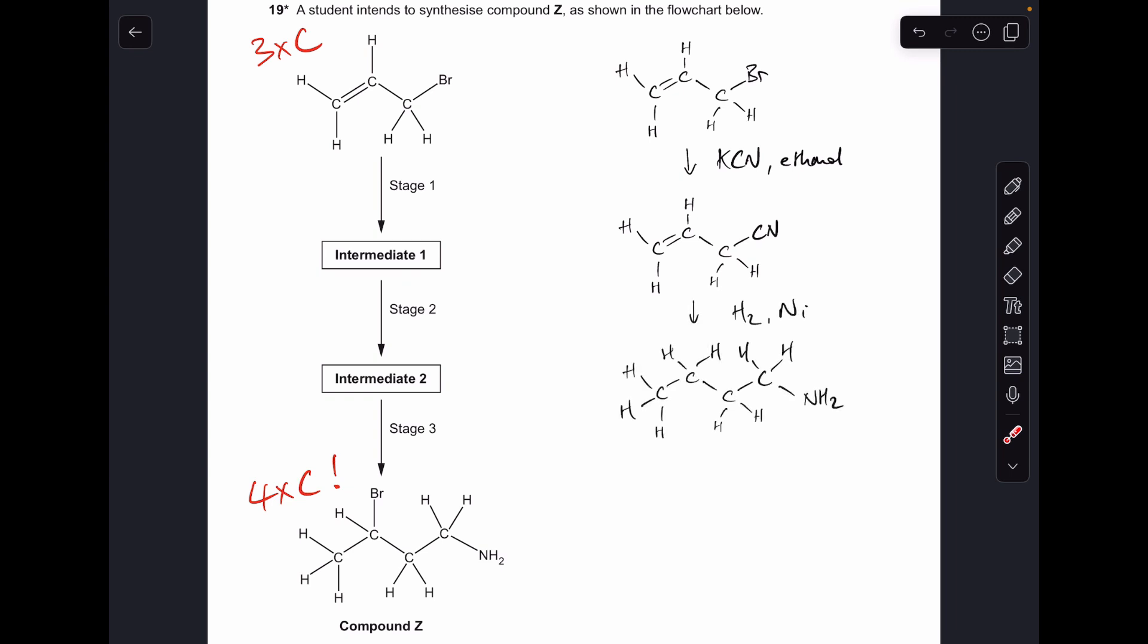But for this next method, I'm reacting intermediate one with hydrogen in the presence of a nickel catalyst. That's going to actually react with the alkene group and turn it into an alkane, but it'll do the same as it did before with the nitrile group and turn that into the amine.